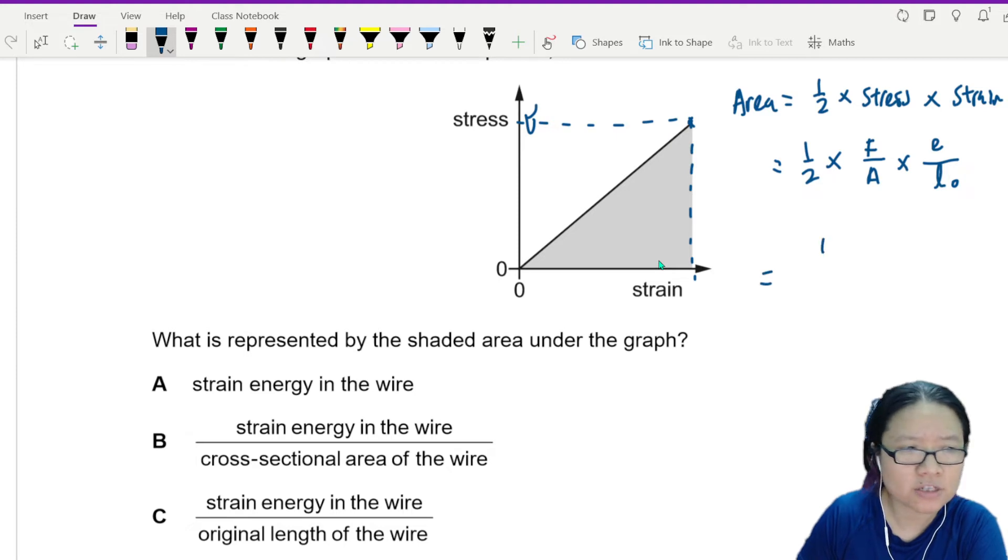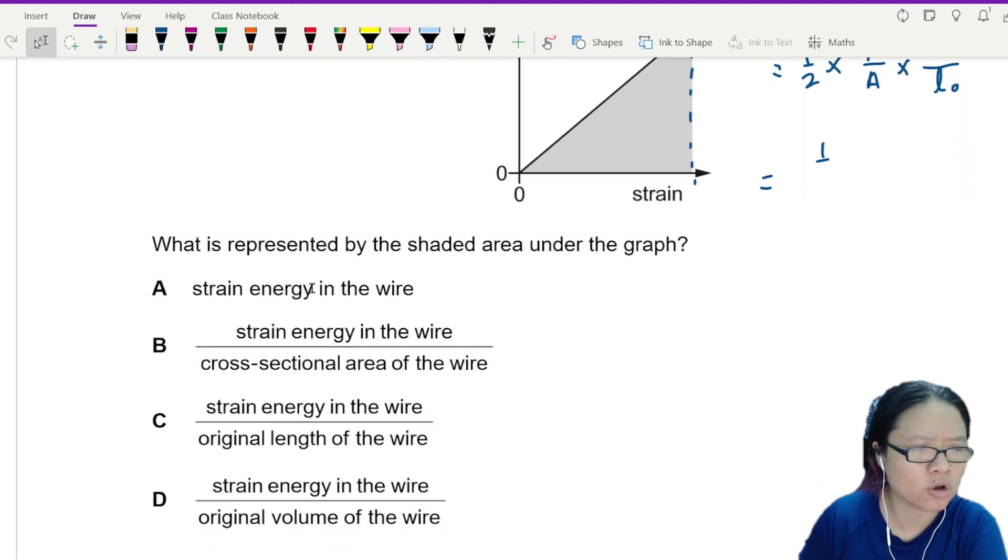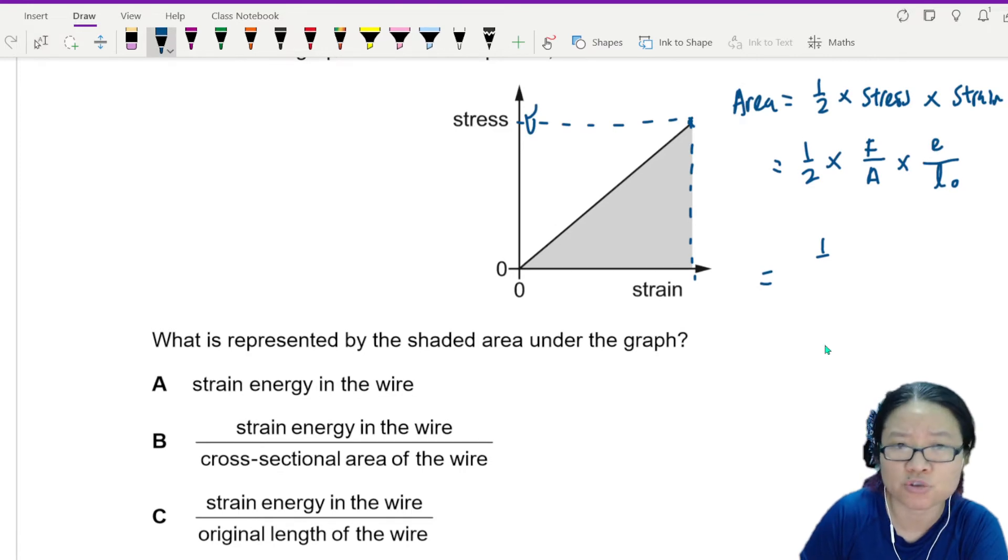Let's look at this - I see a lot of strain energy in the options, so I must try to find strain energy. This is half Fe over AL naught.